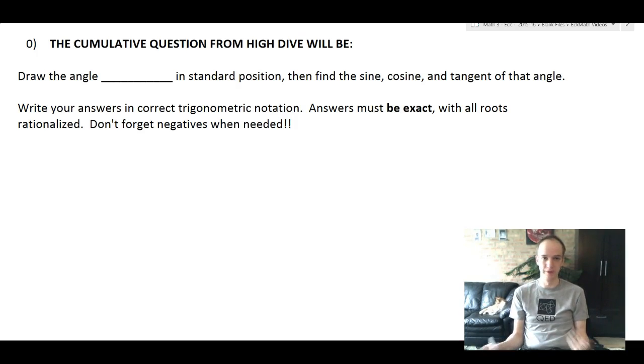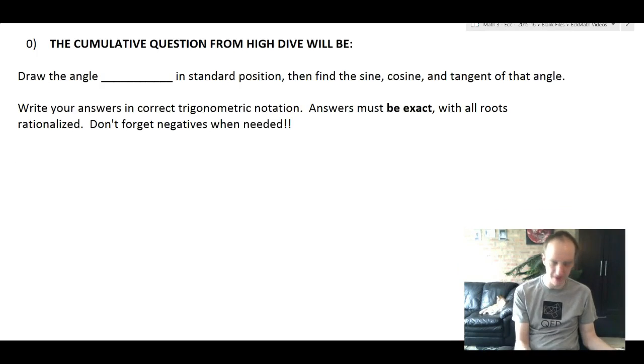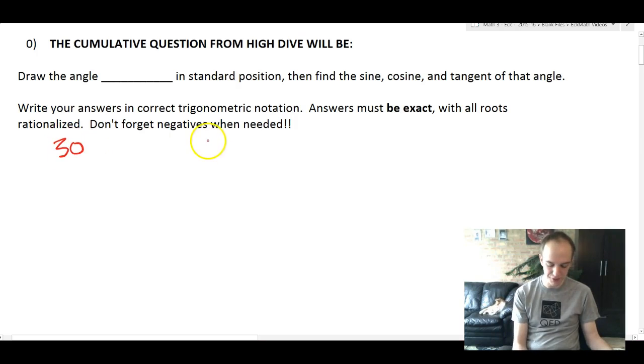When we make a test cumulative, we want to be completely clear with you what the question is going to be. We don't need you studying all of HiDive, but we do need you to know how to do the question you see on your screen. It says draw the angle blank in standard position, then find the sine, cosine, and tangent of that angle. The reason this angle is blank is that we could pick any angle, as long as that angle is a multiple of 30 or a multiple of 45.